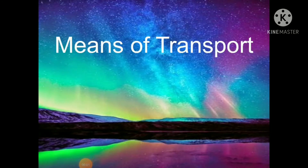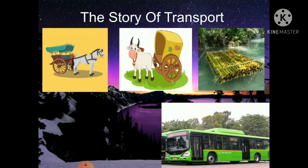Hello everyone, today we will learn about means of transport. The vehicles that we use to travel from one place to another are known as means of transport. People travel from one place to another for different purposes. We go to school, to our workplace, to the market, to the hospital, to the post office, for social gatherings like weddings, birthday parties, etc. To go on holiday trips, we use a bus, train or plane. These are all different means of transport.